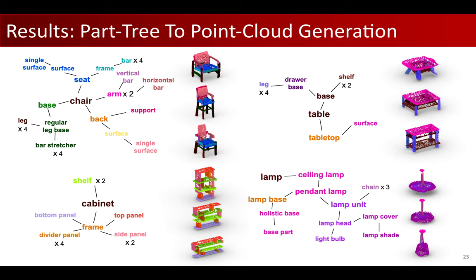For each part tree input, we can generate multiple shape candidates with diverse geometry by sampling different random variable z's.